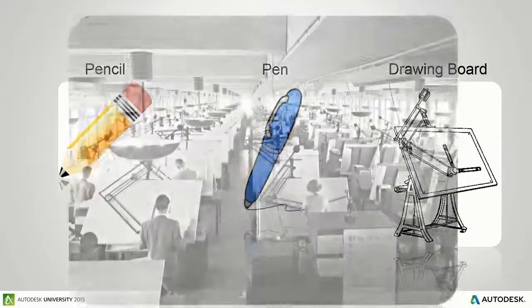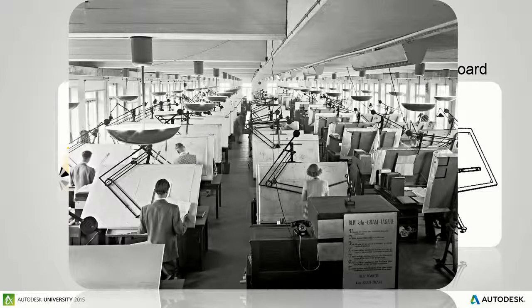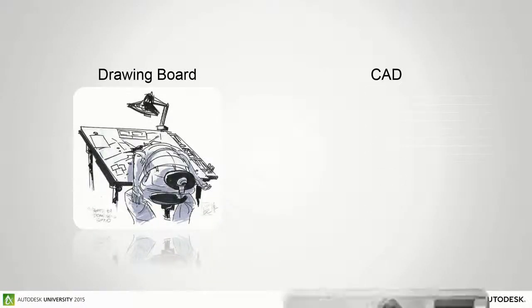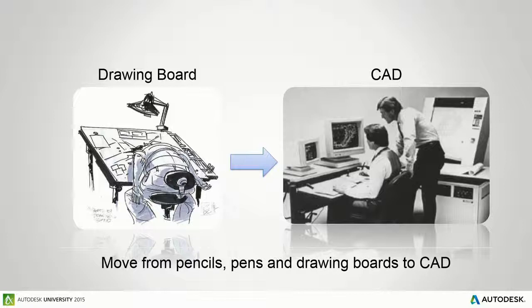Young people in the room: there used to be a place called a drawing office where we all sat at desks and drew things with pens and pencils. Now most of you have got phones and iPods. But back in the late 70s, mid to late 70s, we moved from a drawing board to things called CAD. I'm not old enough to have done it properly in industry, but I know about it. It should have improved the way we work, though most people probably stayed on hand drawings for a long time.